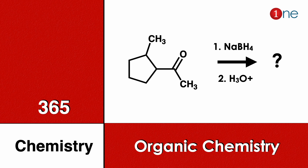Welcome to One Chemistry. This is the 365 Chemistry Series — organic chemistry questions. Here you have cyclopentane, a methyl group, and CH3CO. You are using sodium borohydride and acid hydrolysis. Find what will be the final product.